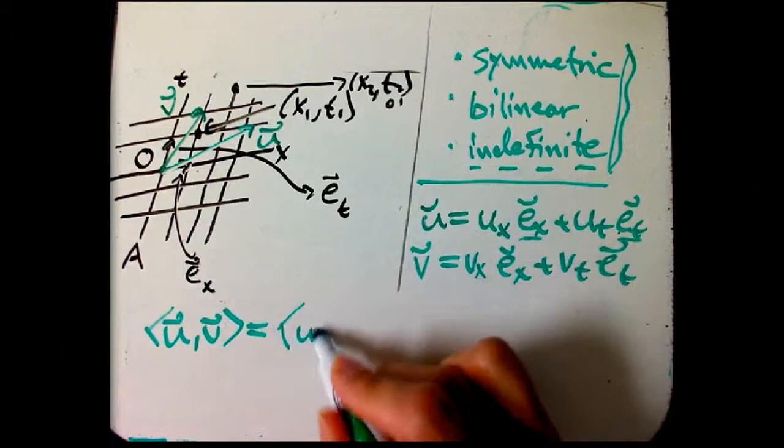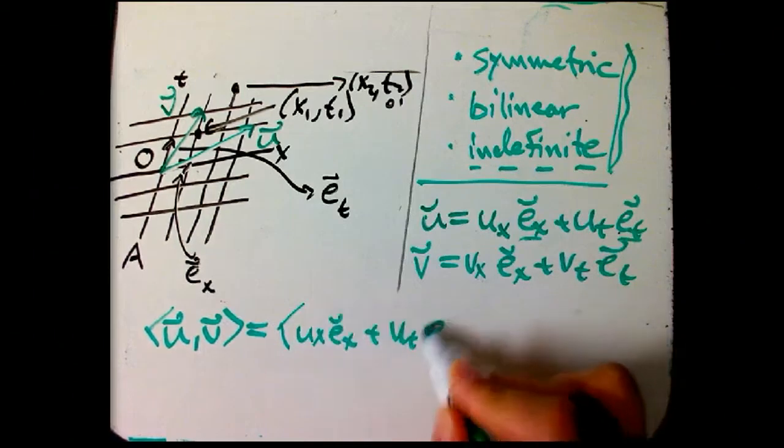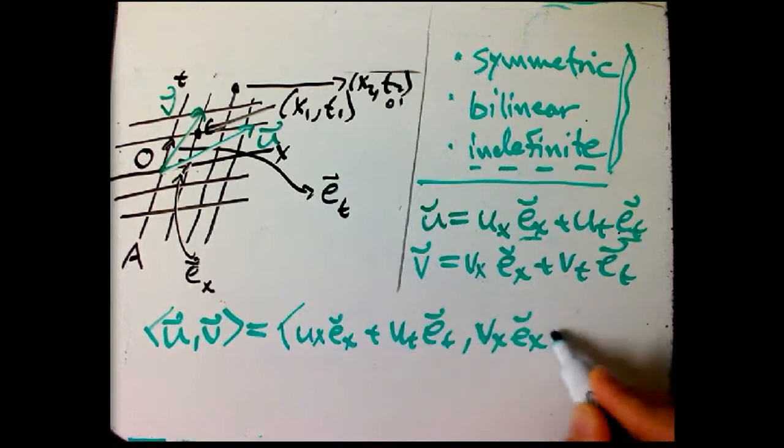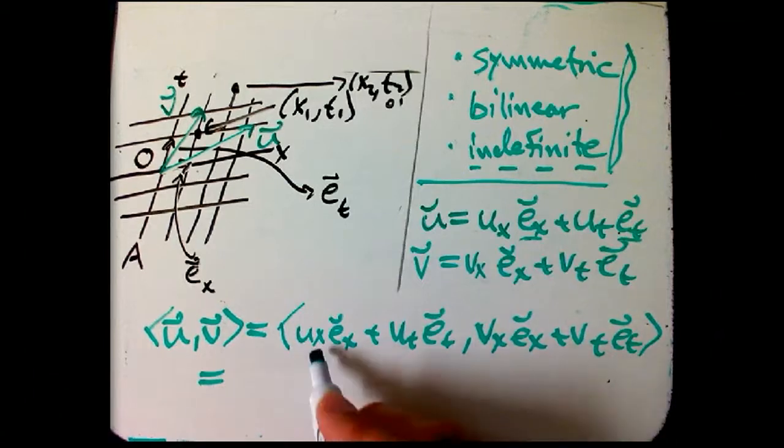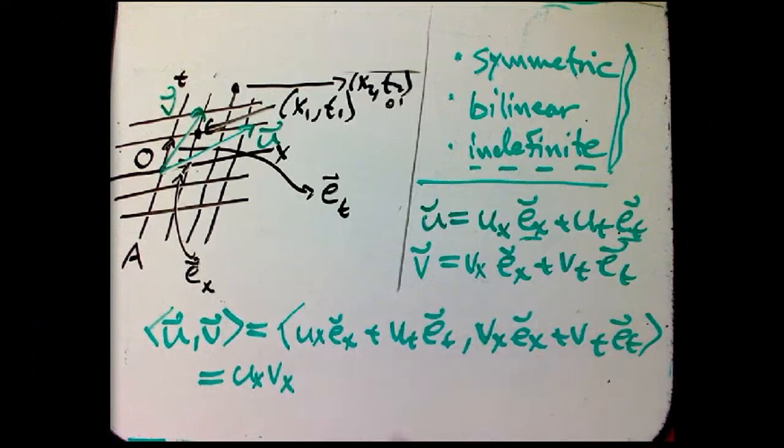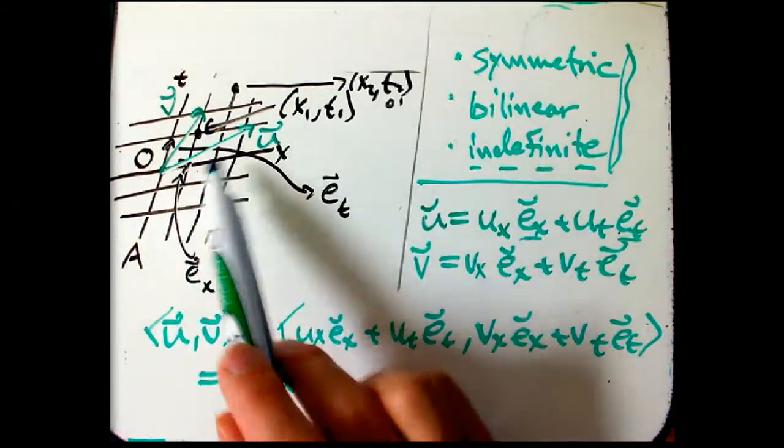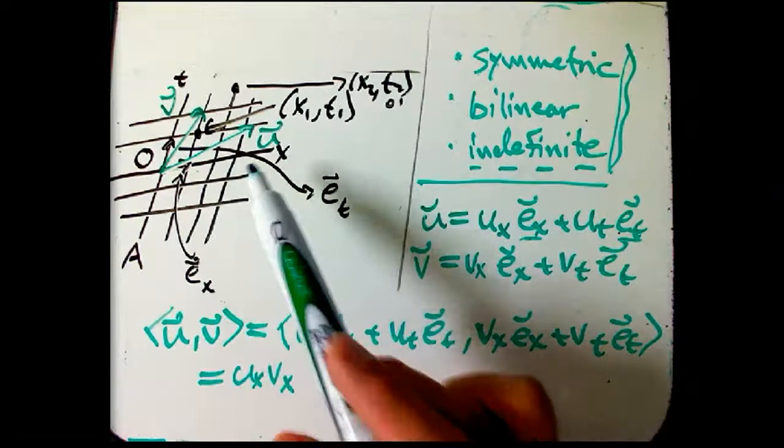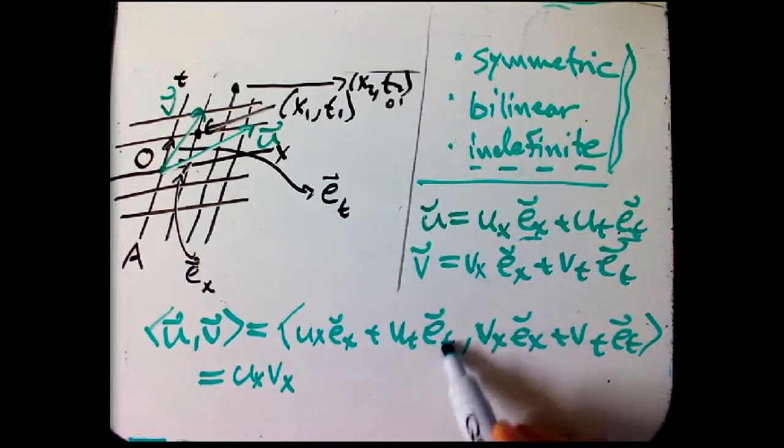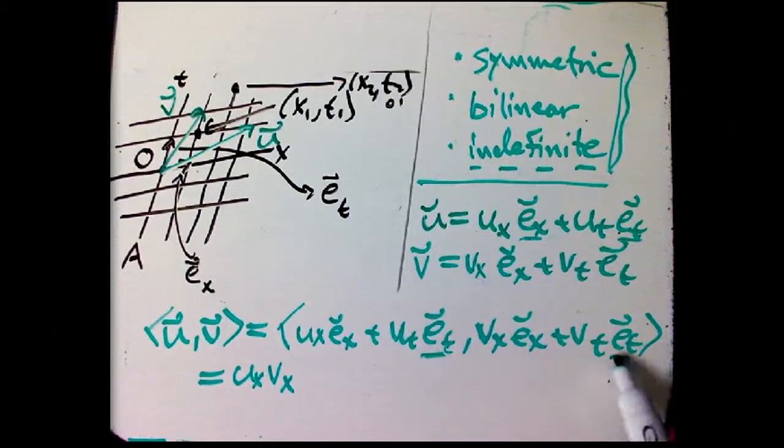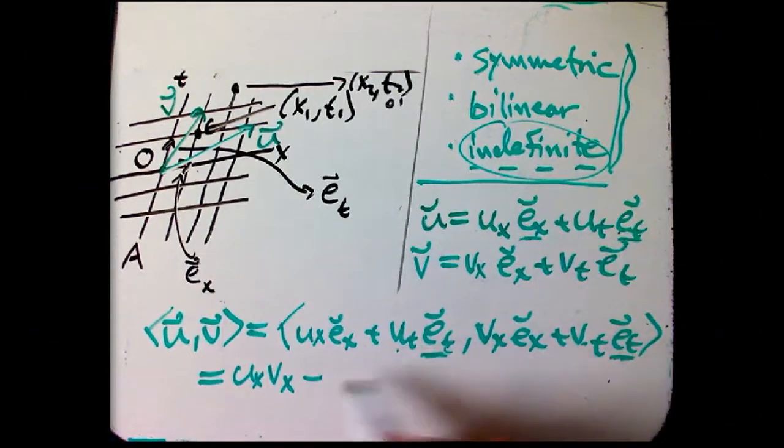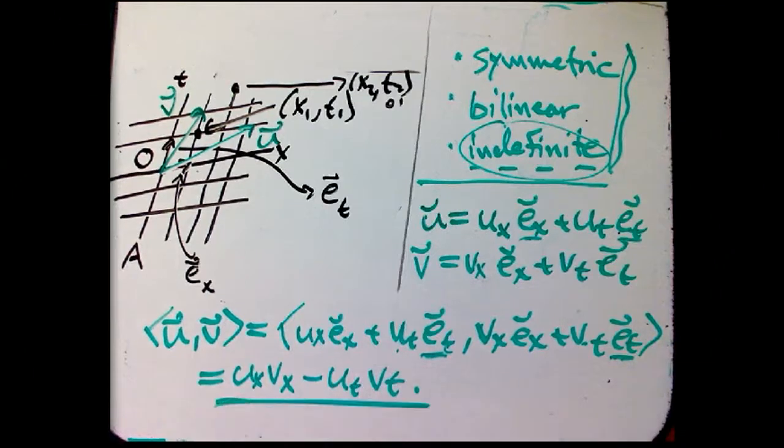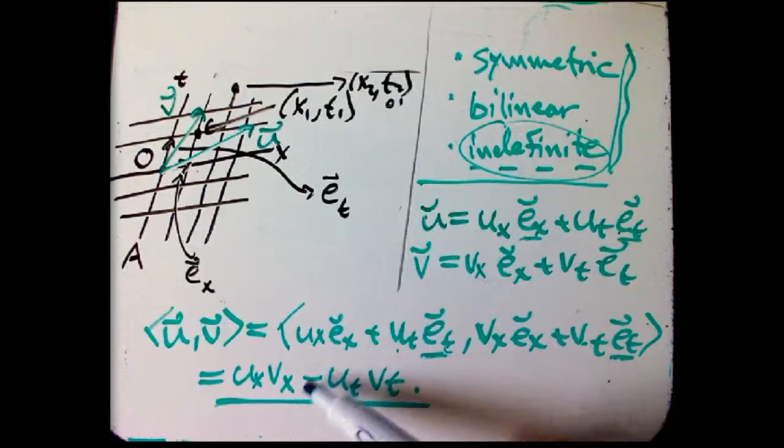So all we do is we calculate UV, the scalar product, which we've mainly been using these formal rules for. We're going to use those one more time to relate it to this guy. So we're going to just insert those in here and then foil it out. So ex with ex, that's a space-like unit vector. That's going to give you a 1, and then the coefficients are going to come out, ux, vx. ex with et, that's going to be 0 because they're orthogonal. And then et with et, that's a unit vector, but it's supposed to be the opposite sign. And so you get minus the product of those coefficients, ut, vt. And that's exactly the formula that I had right at the start.